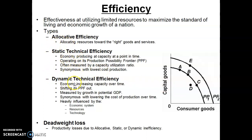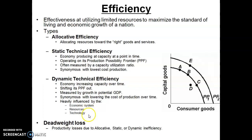The ability for an economy to shift its production possibilities frontier out is dependent upon three broad factors: economic system, resources, and technology.